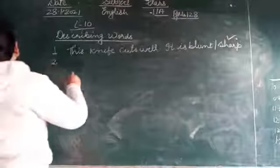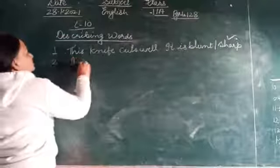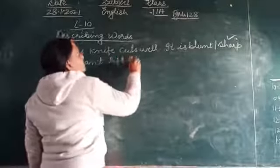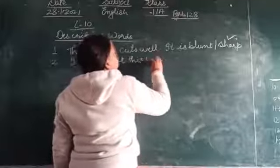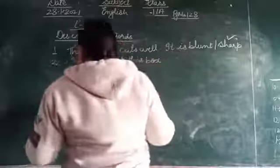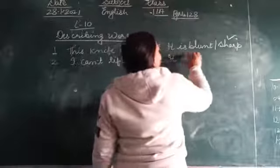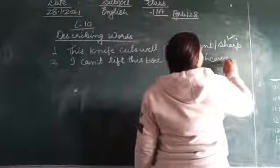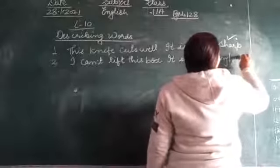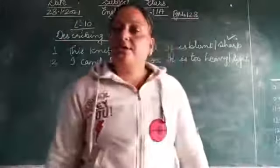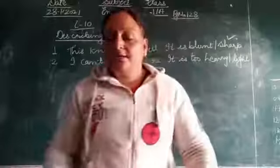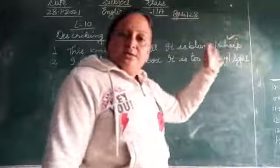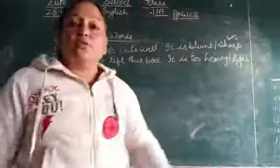Number 2: I can't lift this box. It is too heavy or light? The answer is heavy. Here you can see the opposites - blunt means sharp, heavy means light.